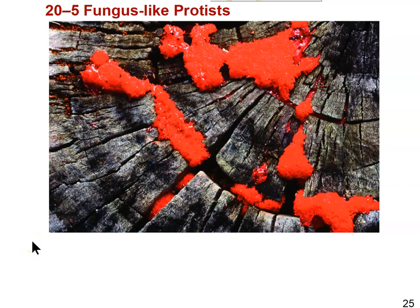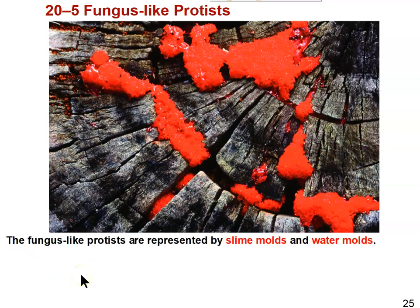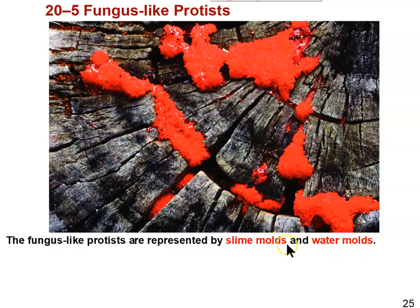Notice that they're fungi-like, not fungi, even though a lot of the terminology used for them is very similar to what we use for the kingdom fungi. They're represented by two groups — these are common names, not taxonomic names. They're not a kingdom, phylum, class, order, family, genus, species, or domain. So we've got the slime molds and the water molds. These are not considered true fungi, so don't be confused by the term mold. We usually use that term to describe true fungi, but these are not true fungi.